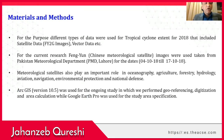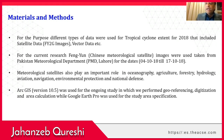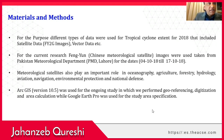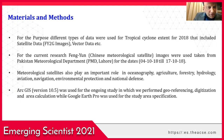Materials and methods. For the purpose of our investigation, we used different types of data for tropical cyclone extent for the year 2018. This included satellite data from the Chinese meteorological satellite FANJINE-2G, as well as vector data. Satellite images from the FANJINE Chinese meteorological satellite were obtained from the Pakistan Meteorological Department, Lahore, for the dates 4th October 2018 to 17th October 2018.